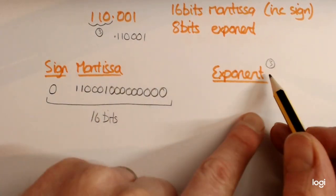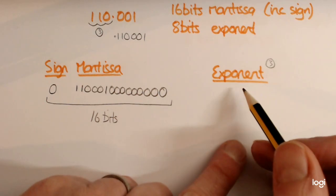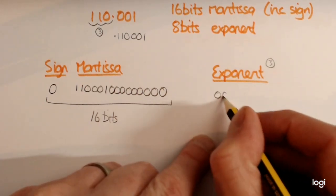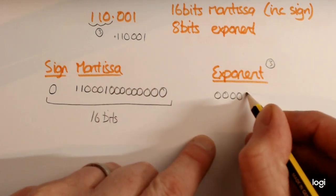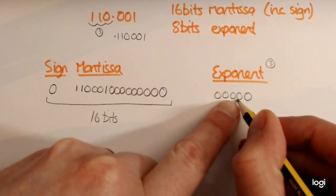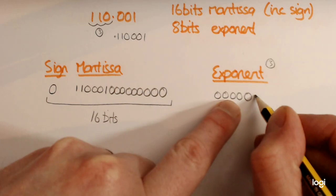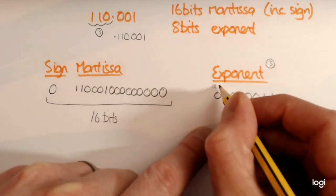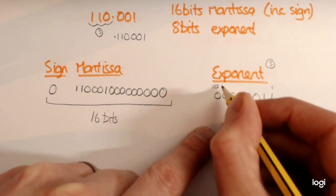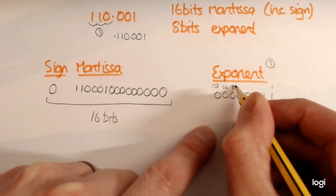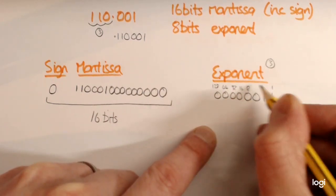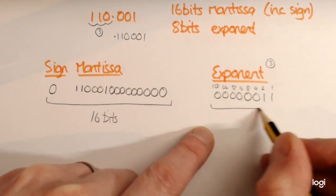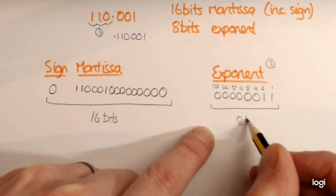For the exponent value of 3, you just need to think about what 3 looks like using 8 bits. That's 0, 0, 0, 0, 0, 0, 1, 1. Remember from National 5, you'd have had those column headings — it's just a case of converting an ordinary decimal number into binary. And that's your 8 bits.